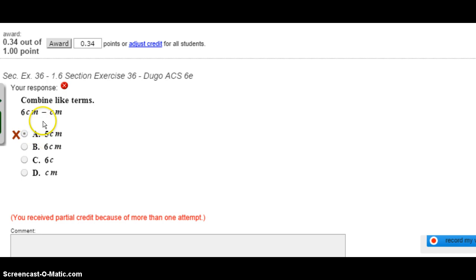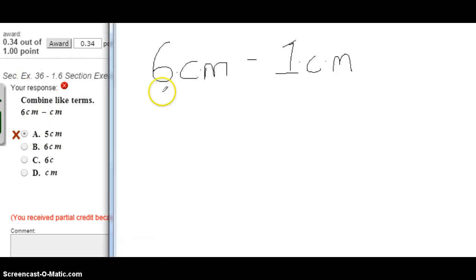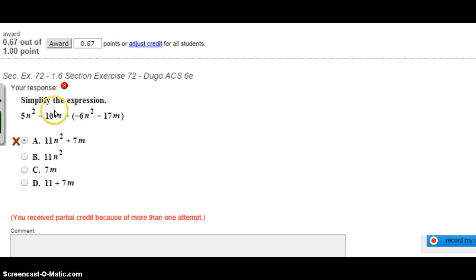So on this problem, we need to combine like terms. And so what we have is 6 cm minus 1 cm. And the 1 is not written here, but it can help you to write it in. So the cm is some value. It stands for something. We don't know what it is, so it's variables. We use cm. But we have 6 of them, and we're subtracting 1 of them. Whatever that cm stands for, we're having 6 and subtracting 1, which will leave us with 5 of them then. So you just do kind of normal subtraction, but you're subtracting the numbers here in front of the variables.